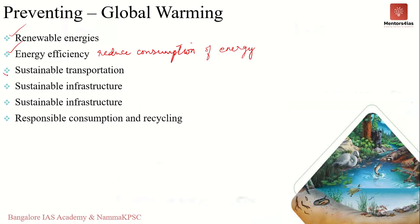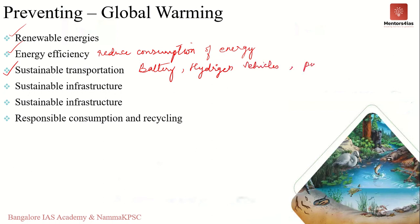The next measure is sustainable transportation — shifting from internal combustion engine vehicles to battery and hydrogen vehicles, as well as promoting public transportation. This is one of the most viable ways of combating global warming and is strongly promoted by environmentalists and conservation activists.